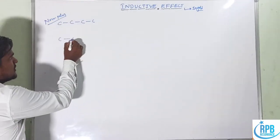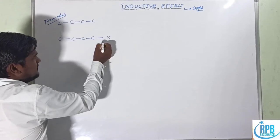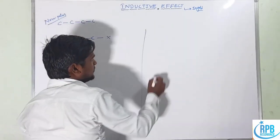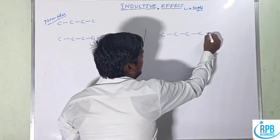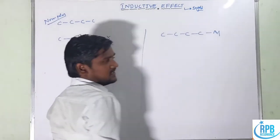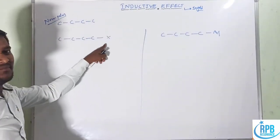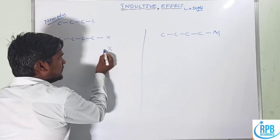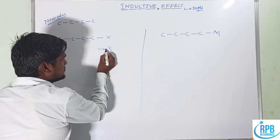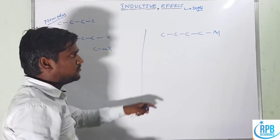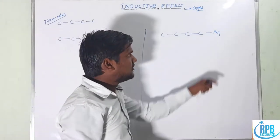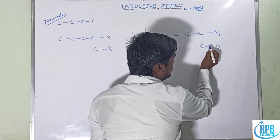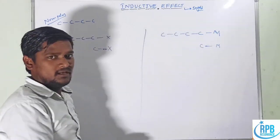Whenever these compounds are connected to either a more electronegative atom or a less electronegative atom such as metals, a more electronegative atom pulls the electron cloud towards itself. A less electronegative atom pushes the electron cloud away from itself.